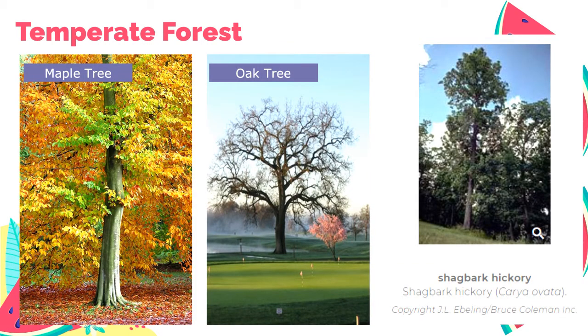These are more examples of trees that can grow in temperate forest: maple tree, oak tree, and shagbark hickory tree.